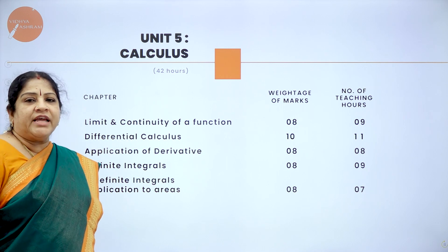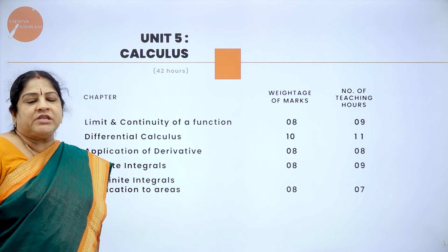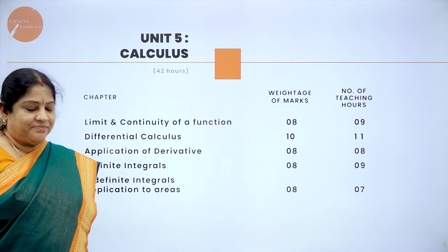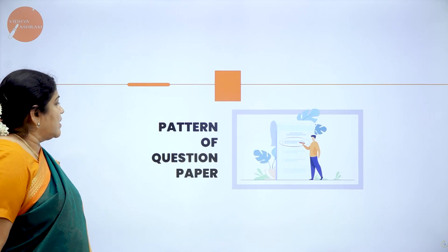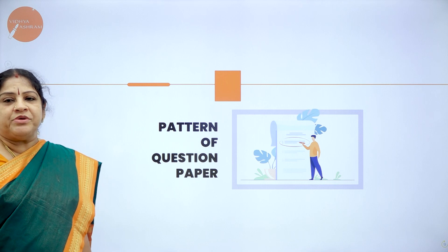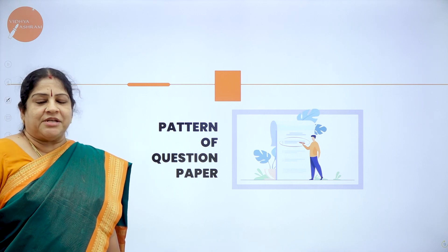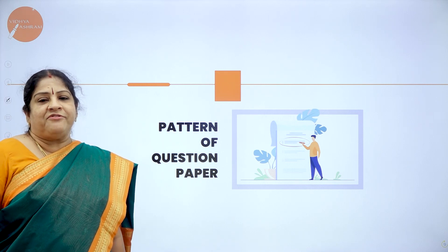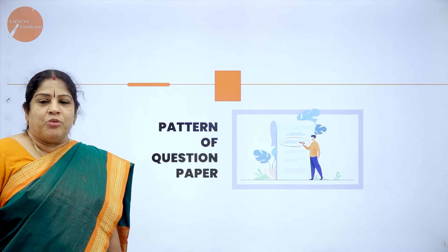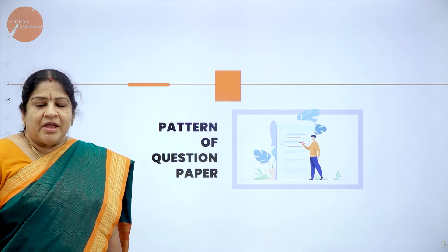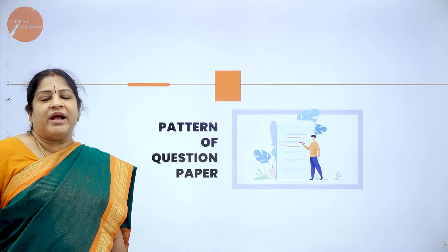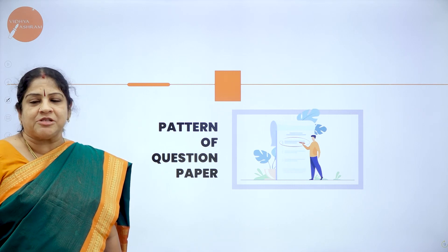In all, we have totally 21 chapters included in 5 units. Next, what we shall look into is the pattern of the question paper, which is more important for you all since you are facing your board exam. Your pattern of question paper is the same as what you had faced in your first PUC.